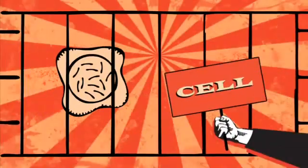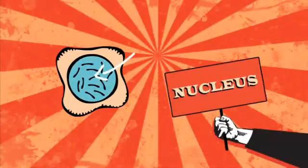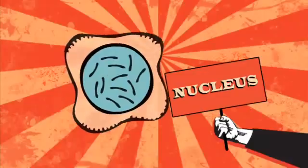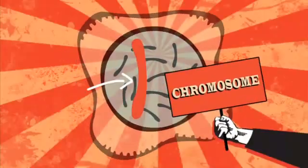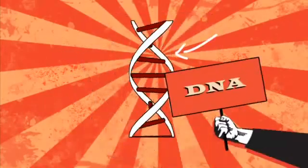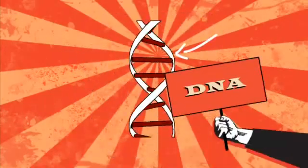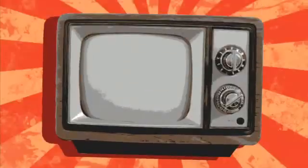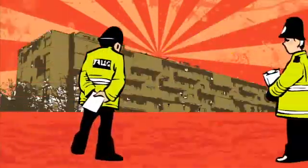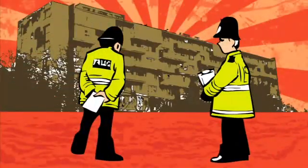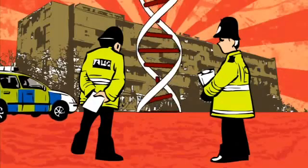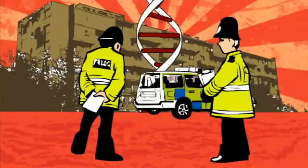Here is a typical cell. This is the nucleus. Zooming in, we can see the chromosomes, and the chromosomes are made from long molecules of DNA. Watch CSI, Silent Witness, and they are always looking for DNA. So why is it so important?